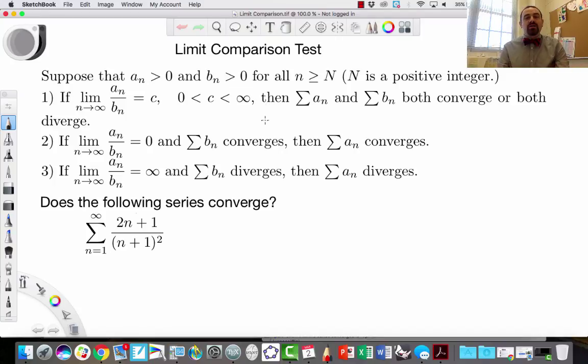We have the Direct Comparison Test, which allows you to show that if one function bounds another function, or one series rather, is on top of another series, then we can figure out which, if one diverges, one diverges, if one converges, one converges. We can figure that out. The Limit Comparison Test is kind of similar, except it allows us to show that two series are effectively the same as they keep on going. So let's take a look at it.